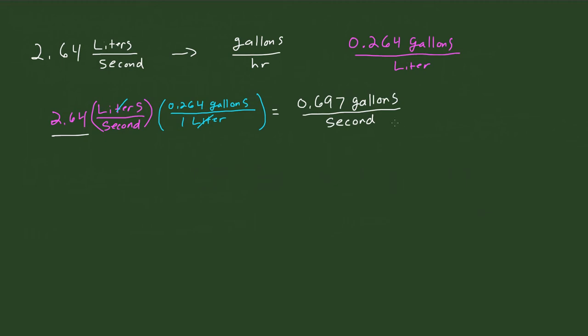Right, so now we need this in hours. So what we do is, we know the conversion factor for seconds to hours. We know that there are 3,600 seconds per every hour.